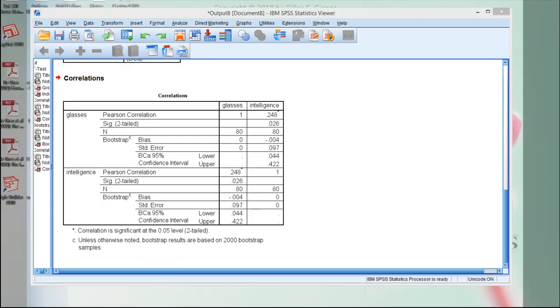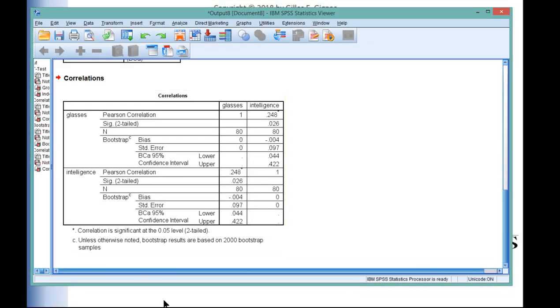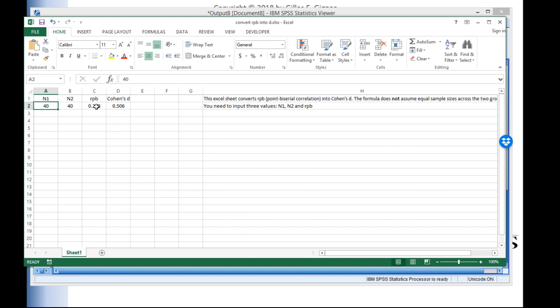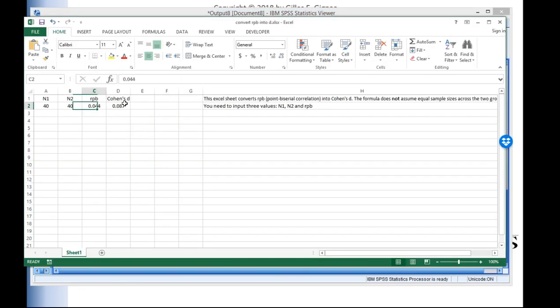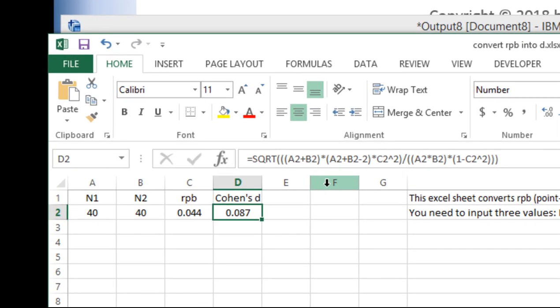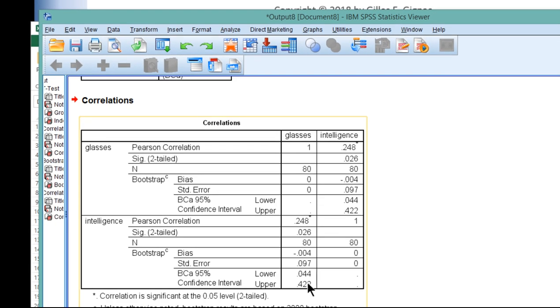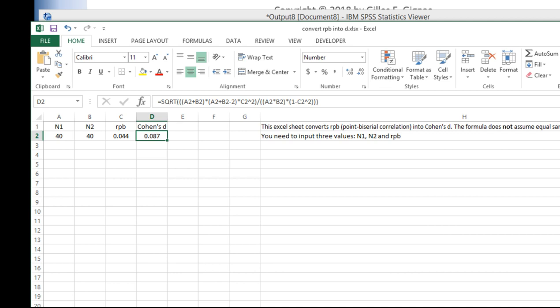So now that I've got the right formula and I've got the lower bound point-biserial correlation of 0.044, I can put that into here and I've already got the sample size of 40 and 40. That was actually the sample size for my two groups, 40 and 40. And the lower bound is 0.044, the point-biserial correlation. And that gives me a lower bound Cohen's d of 0.09. Now the next one I would take is the upper bound. So the upper bound of the 95% confidence interval is 0.422. And so now I'm going to have to input that into the formula, 0.087.